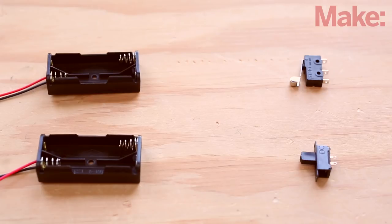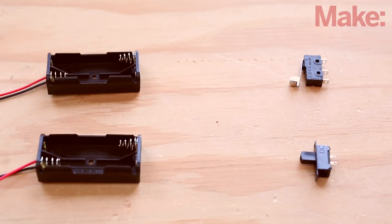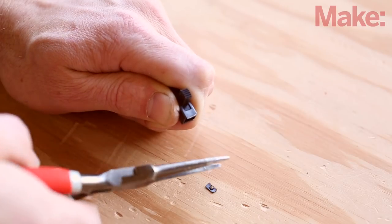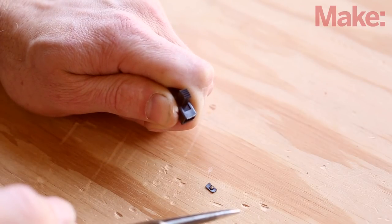We'll start by building the power system, which consists of two battery holders and two switches wired in series: a master power switch and a tail-dragger roller switch that cuts the power when the robot is not resting upright. Remove the threaded ears from the ends of the slide switch by bending them back and forth with pliers until the metal fatigues and breaks.